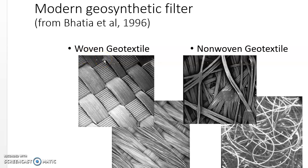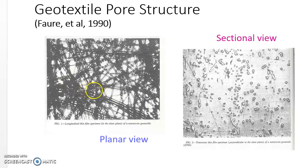Geotextile filter has two different categories: the woven type and non-woven geotextile, which are differentiated by the manufacturing process and weaving types. The woven geotextile has very uniform and regular opening size, whereas the non-woven geotextile is more frequently used because it shows better filter performance. Non-woven geotextile generally shows over 60% porosity and low specific surface area compared to the granular filter.